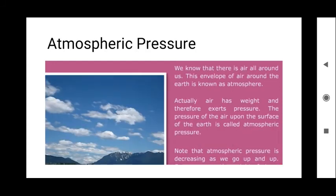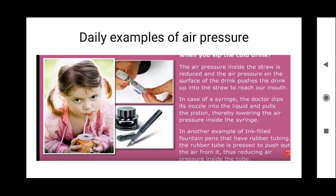Now let us come to the last topic of this chapter: atmospheric pressure. We know there is air all around us. This envelope of air around the earth is known as the atmosphere. Air has weight and therefore exerts pressure. The pressure of the air upon the surface of the earth is called atmospheric pressure. Note: atmospheric pressure decreases as we go higher up.